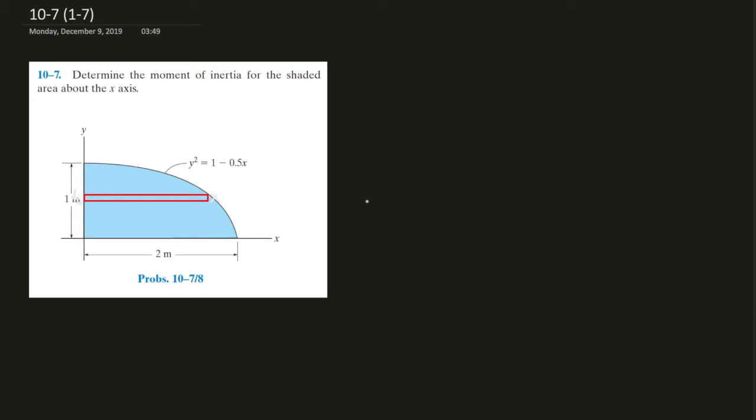So since we're using the x-axis, we're using the eyeball method, looking at it this way. The centroid of this rectangle of the x-axis is right in the middle, so we are allowed to use the y-square value, dA. We're allowed to use just this simple equation over here.